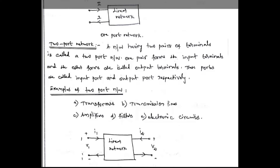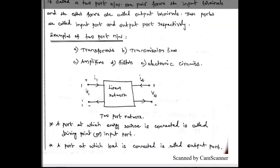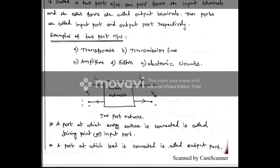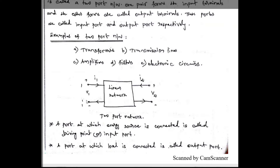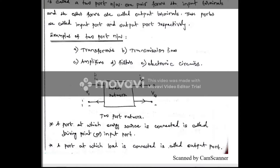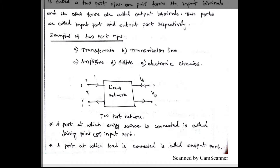This is the basic block diagram of a two-port network. The first pair of terminals is denoted as 1 and 1-dash (input terminal), and the second pair as 2 and 2-dash. The input voltage applied is V1, and the current entering port 1 is I1. The voltage at port 2 is V2, and the output current is I2.